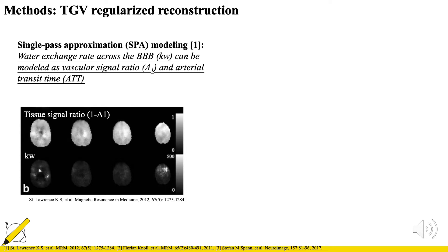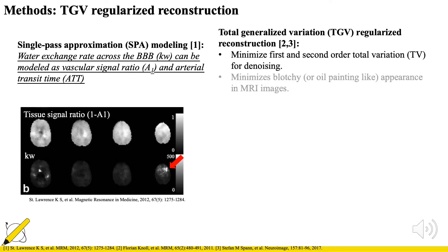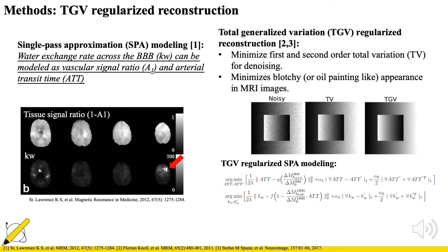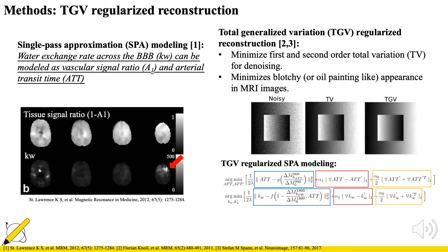The water exchange rate Kw can be quantified using a single-path approximation (SPA) model. However, Kw is extremely sensitive to noise where the tissue signal ratio is close to 1. To improve the robustness of Kw estimation, we propose a total generalized variation (TGV) regularized reconstruction. Kw is quantified by minimizing a fidelity term along with both second- and first-order TV constraints in the TGV regularized SPA modeling.